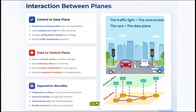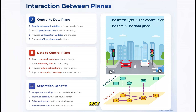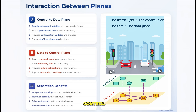The data plane can focus on speed and efficiency, while the control plane can focus on intelligence and adaptability. If you had to make a new decision about every single packet that came through, your network would be incredibly slow. By pre-computing these decisions in the control plane, the data plane can handle packets at lightning speed.